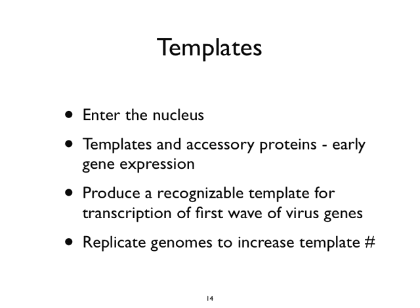That leads to either early or immediate-early gene expression — proteins that either enhance gene expression or are involved in DNA replication — and subsequently that allows for late transcription. The template has to produce a structure recognizable by the host transcription apparatus. The purpose of all this is to replicate genomes to increase template number. If you come in with one viral genome, you want to make hundreds, because you want to make more virus. To make more virus you need more messenger RNA and more protein, and the easiest way to subjugate the host is to increase the template number.